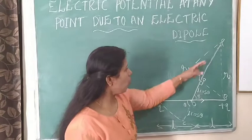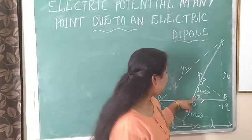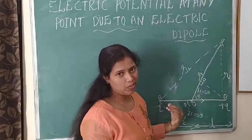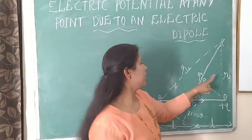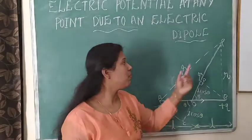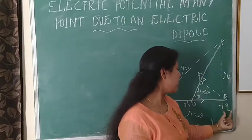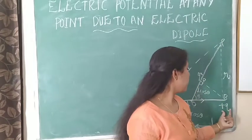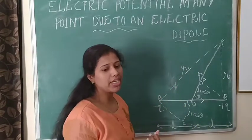Then OP — the center is O — OP makes an angle theta with the electric dipole. R1 and R2 are the distances from point P to the minus Q charge and from point P to the plus Q charge respectively.